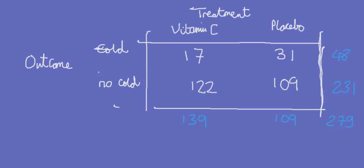This experiment was set up to see whether vitamin C helps to prevent colds. The treatment conditions are vitamin C and placebo. At the end of the experiment, 17 people took vitamin C and had a cold. In total, 139 took vitamin C, 109 did not, and all 48 people who had a cold were split 17 and 31 between the two groups.